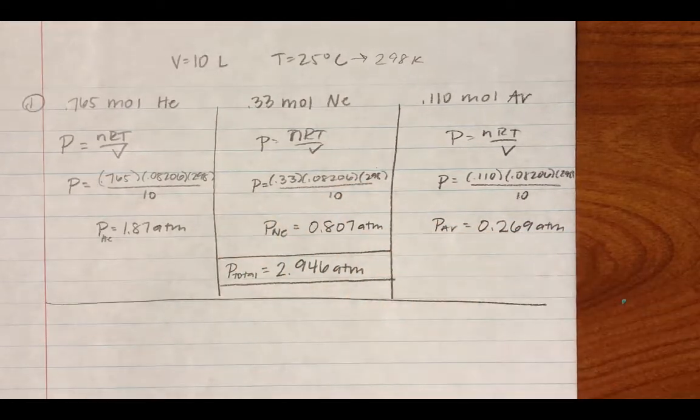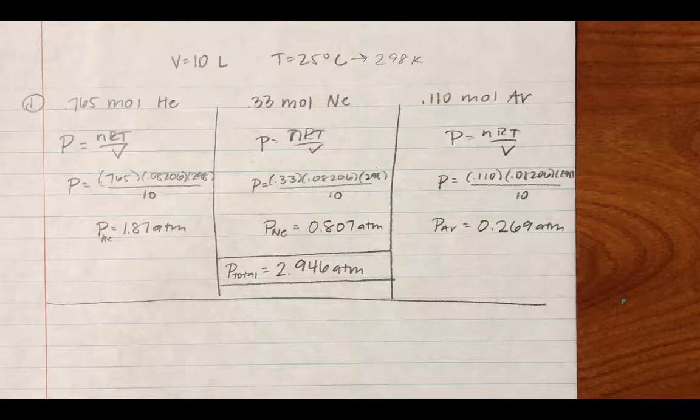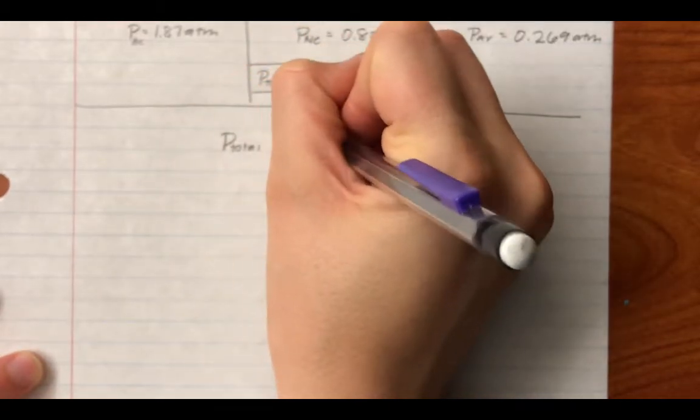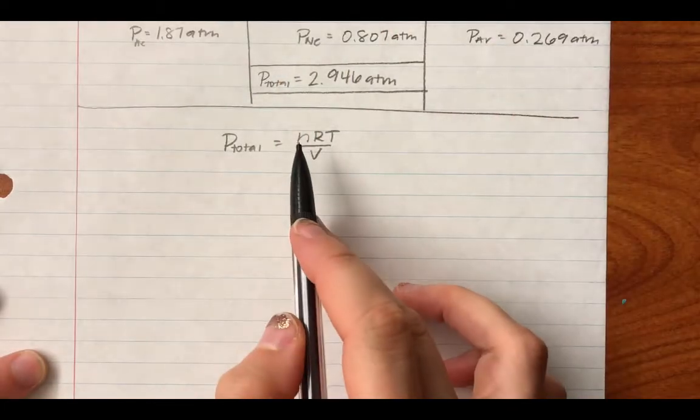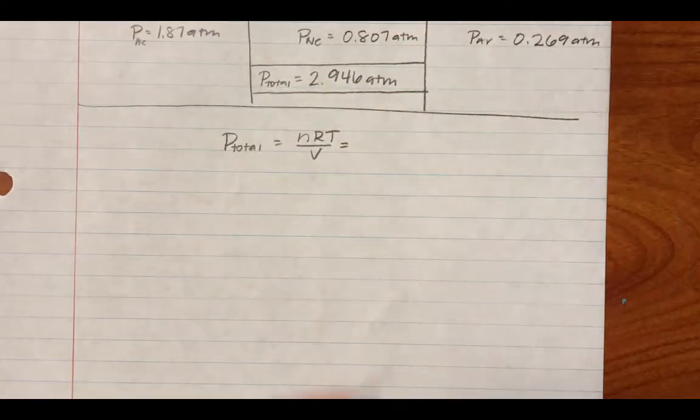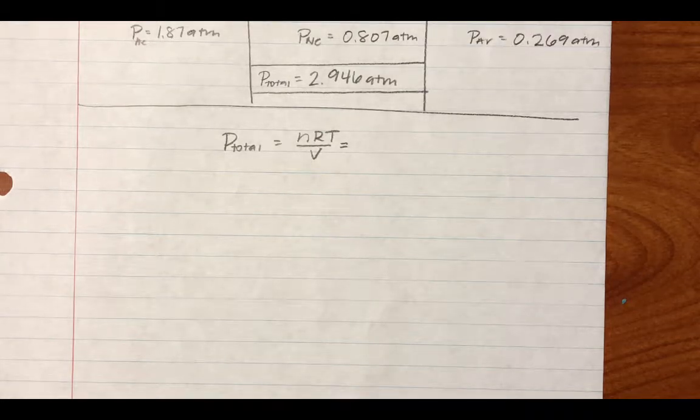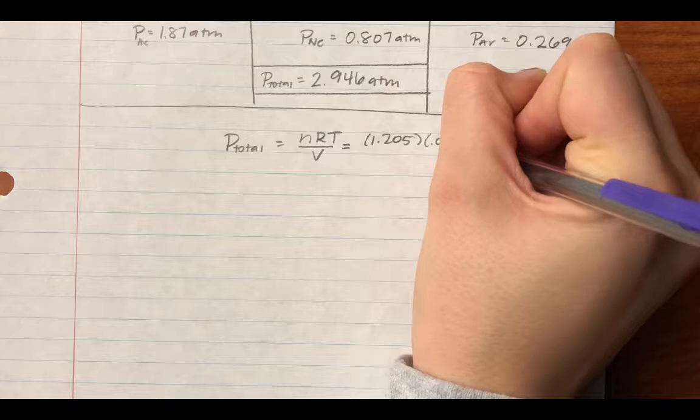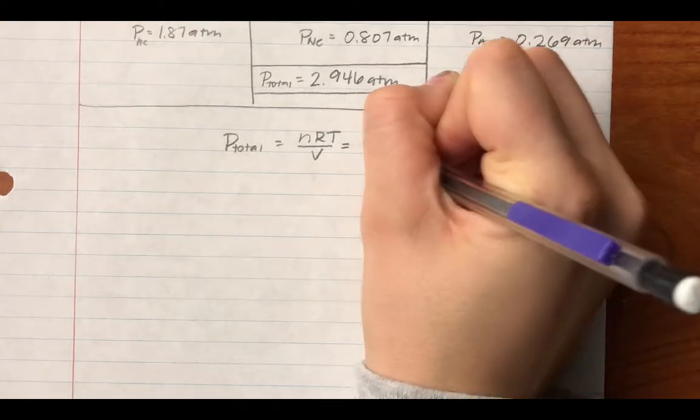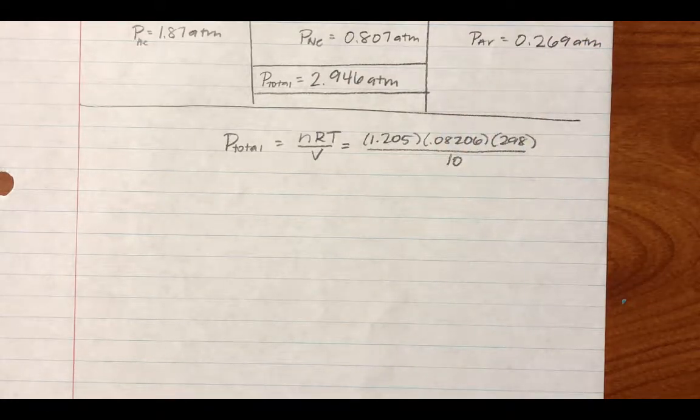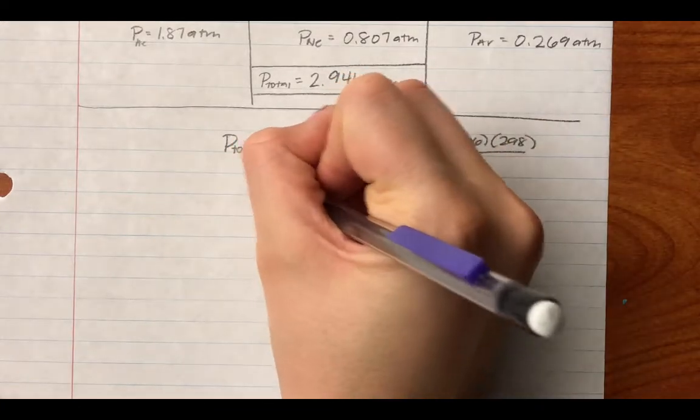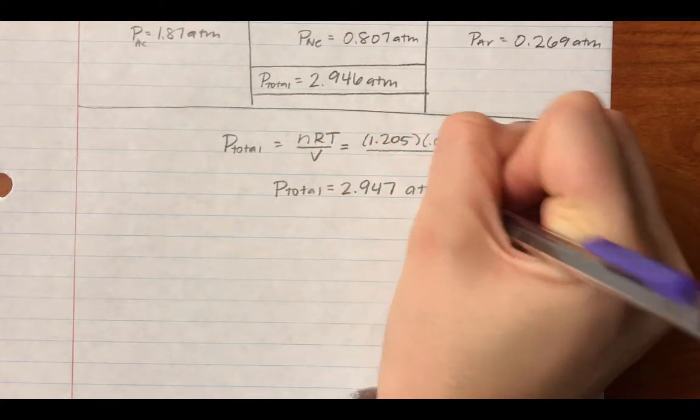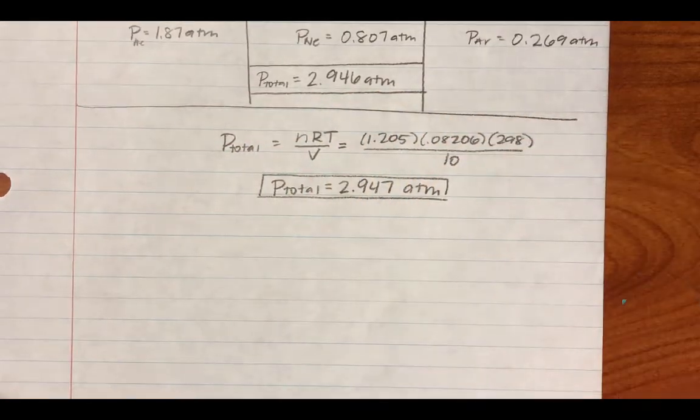Now, another way that I can do this is I can find the total pressure using the ideal gas law. So I can use the ideal gas law to solve for P total. So what that means is I need total number of moles here when I plug this in. So if I add up all three of my moles, 0.765 plus 0.33 plus 0.11, that gives me 1.205 moles times R, 0.08206 times 298, all divided by 10 liters. I find P total to be 2.947 ATM. Notice it's a little bit different just because of rounding.